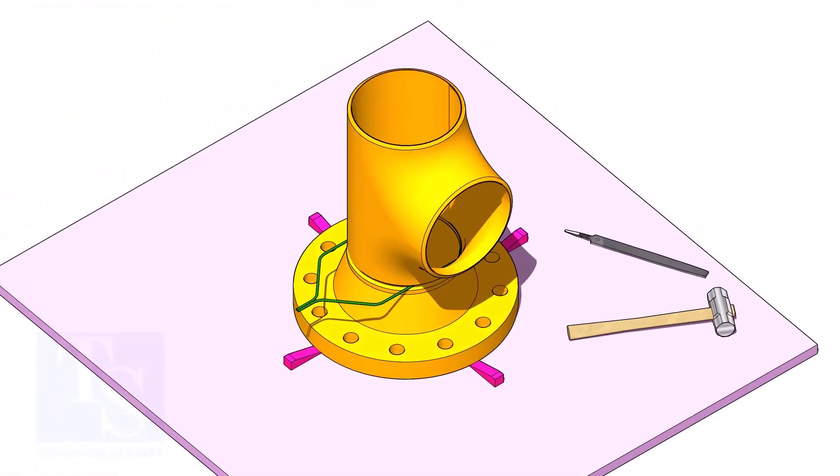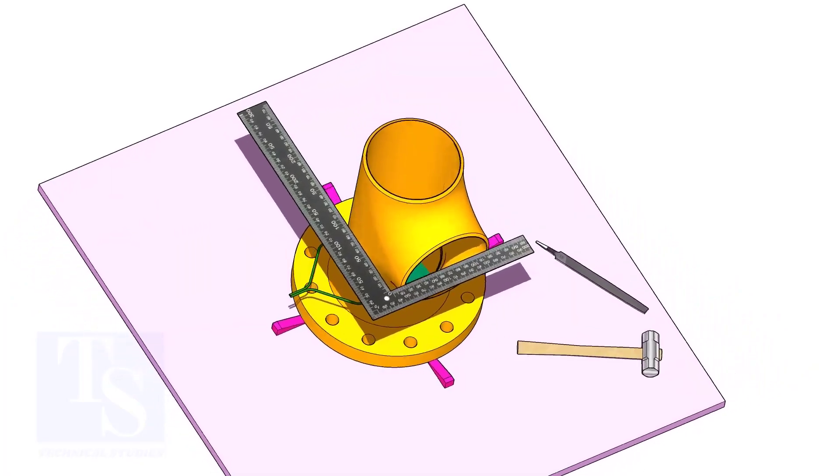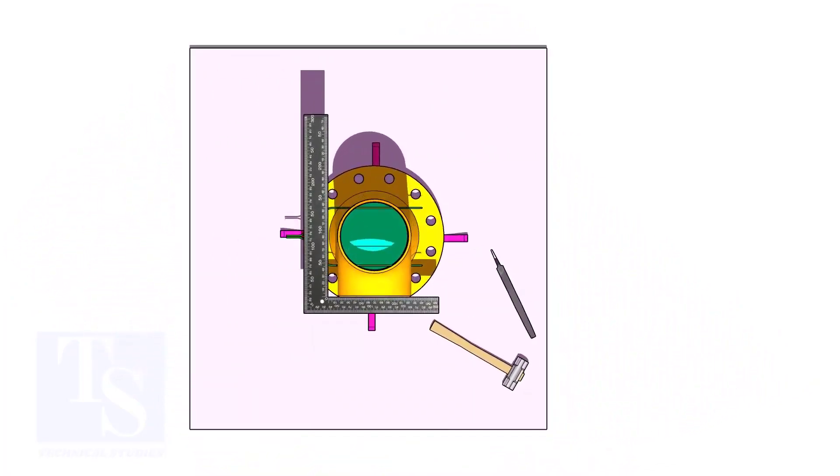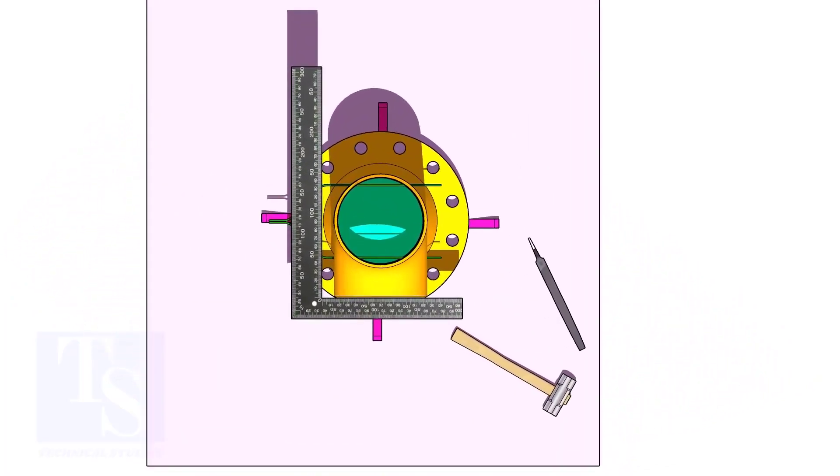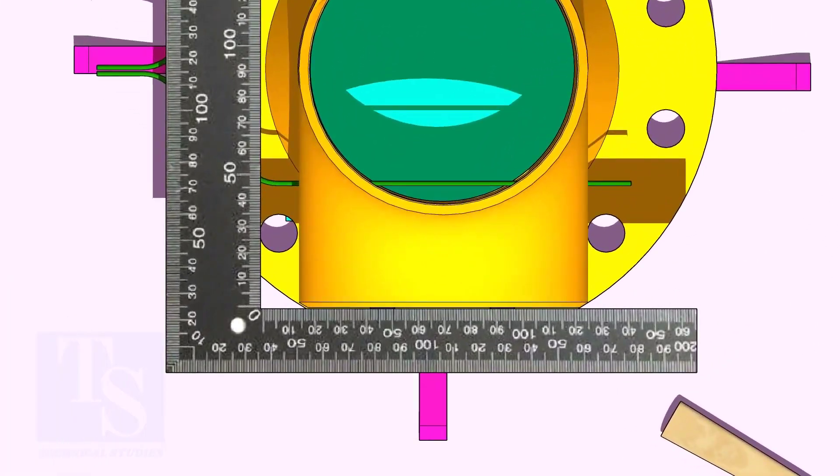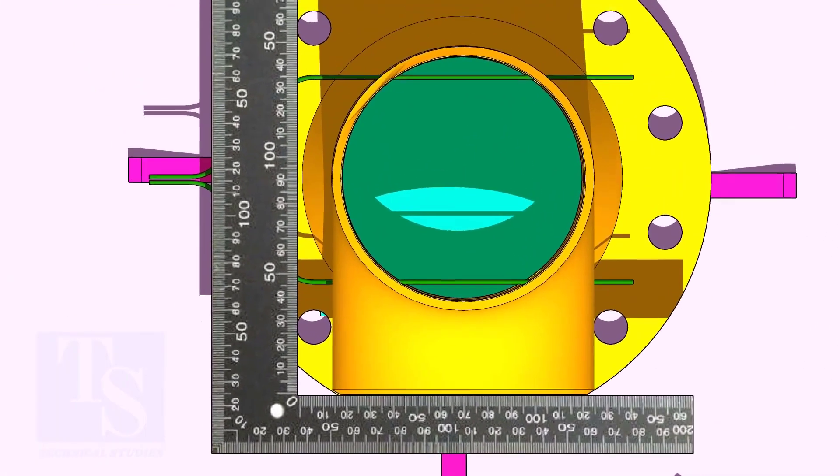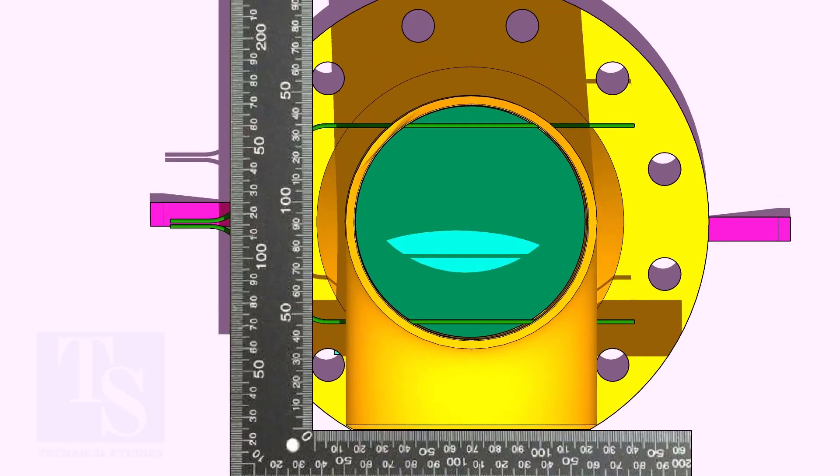Put the tee on the flange. Match the hole center of the flange and the tee face as shown. Correct the overlap.